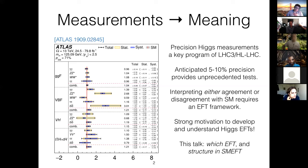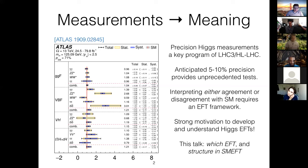Whatever these measurements tell us, interpreting them — whether they're in agreement with the standard model or disagree with it — requires an EFT framework. If they disagree, you need a framework to understand what they're telling you. But even if they agree with the standard model, you'd like to know what this 5% level agreement tells you about the scale of new physics, or bounding the scale of new physics. That's strong motivation to develop and understand EFTs appropriate for describing the Higgs.